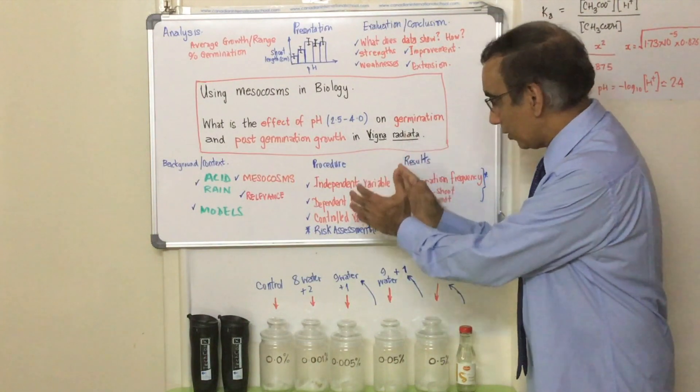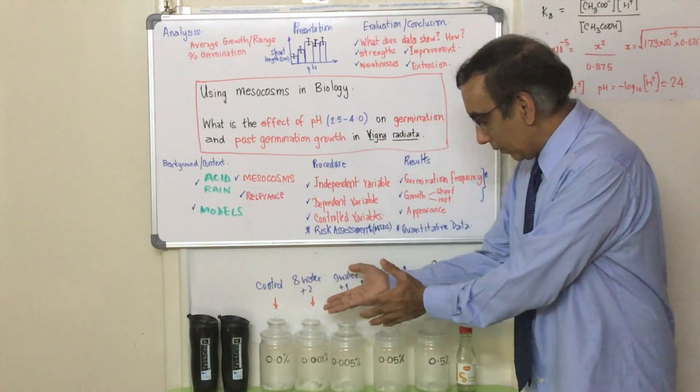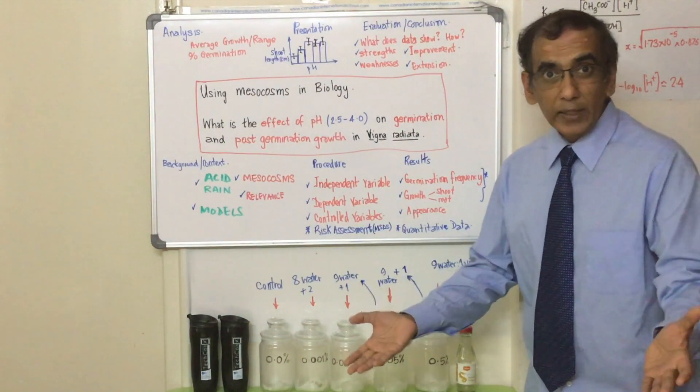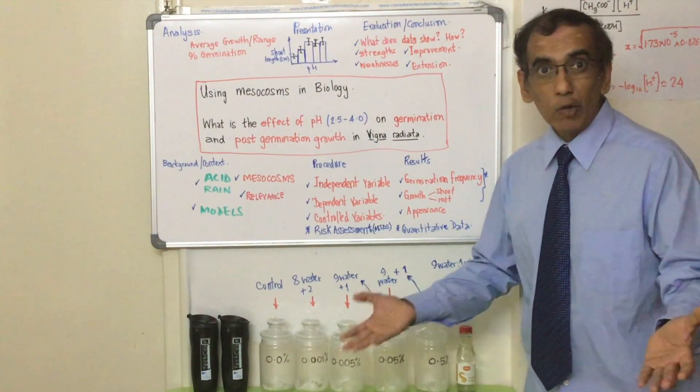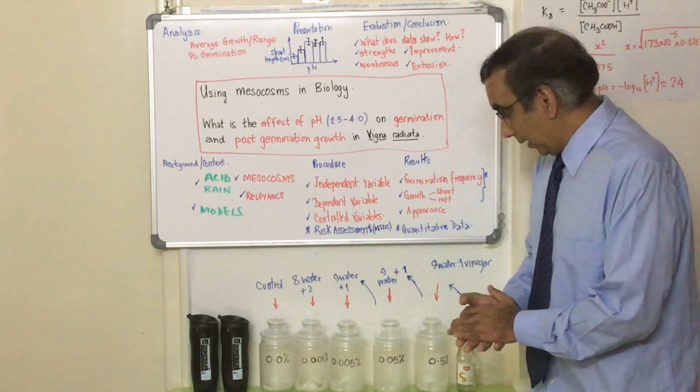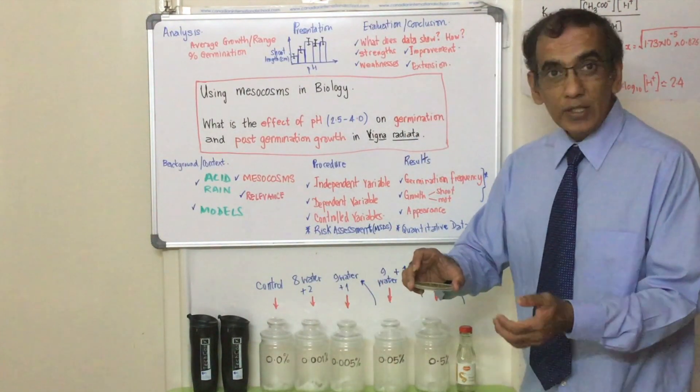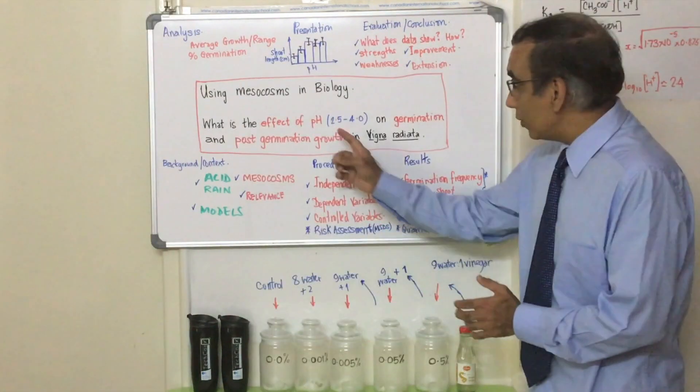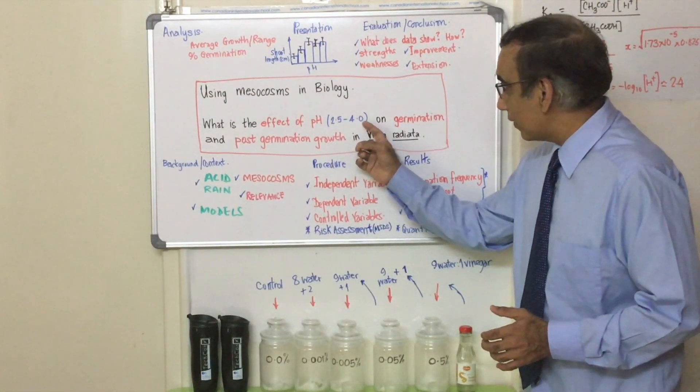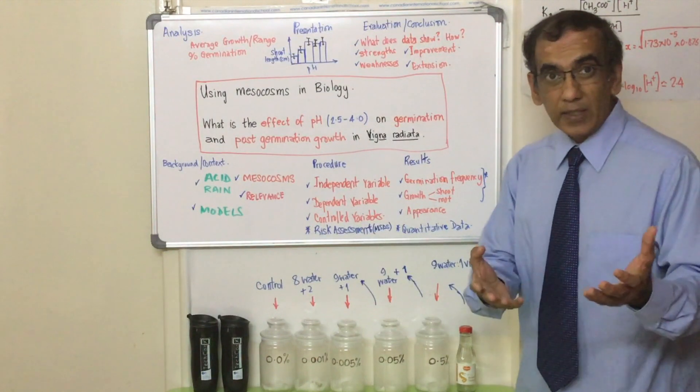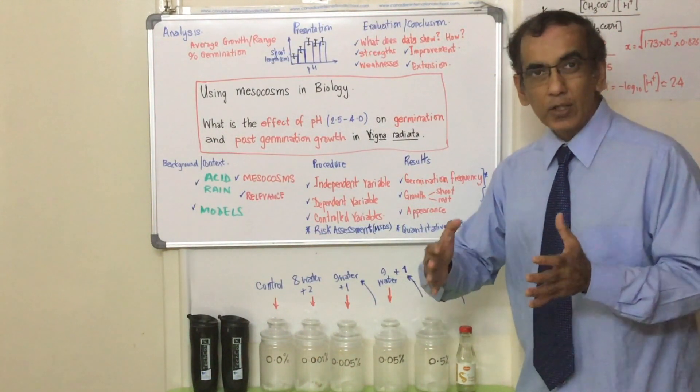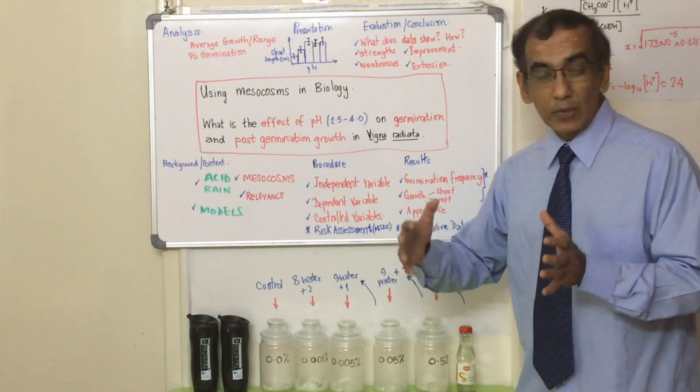Then we get into the procedure. Why are we following a procedure like this? Well, vinegar is the thing that we have available at home right now in our remote learning, and the mung bean vigna radiata is easy to find, it's cheap, and it germinates pretty quickly. Why do we choose this range of 2.5 to 4? The justification for that is because that is pretty much a match with what we define as acid rain.